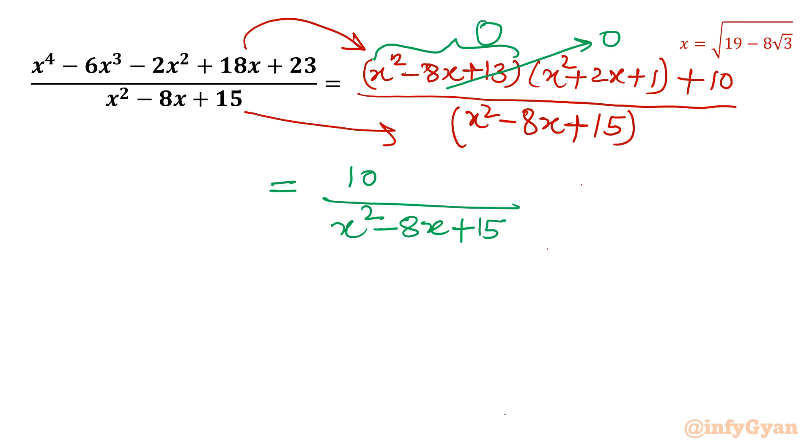Now we know that 13 is 0. So I will split our denominator. So I will write 10 divided by (x^2 - 8x + 13) in one bracket. And what is extra? That is 2. So to maintain this term 15.